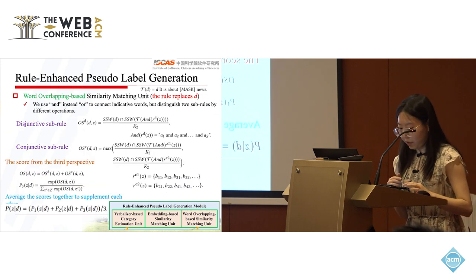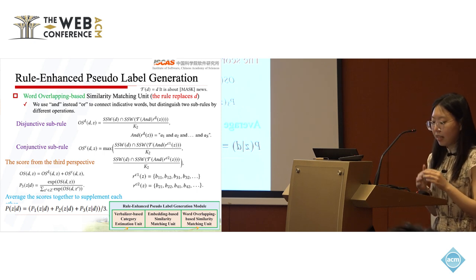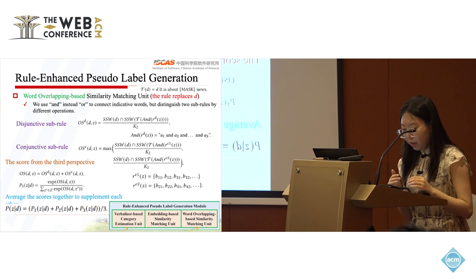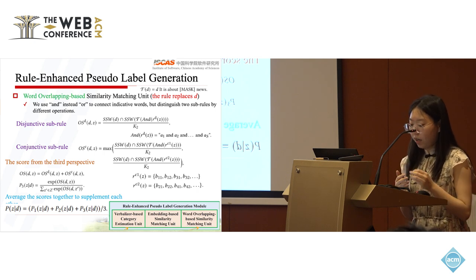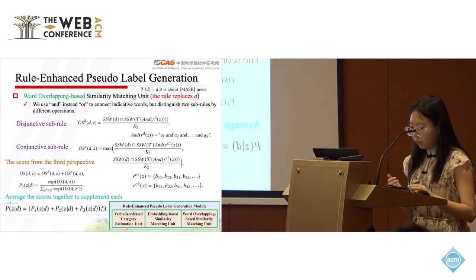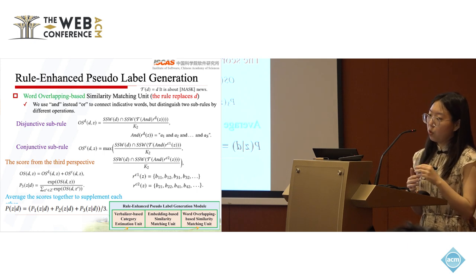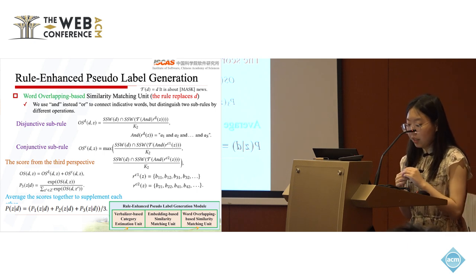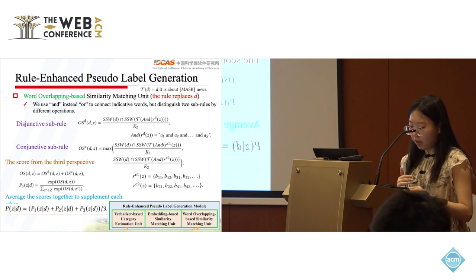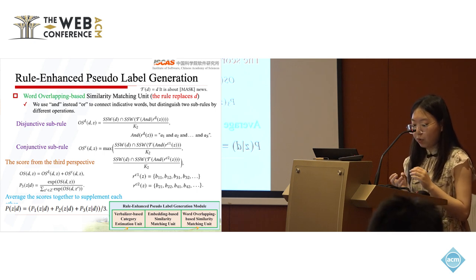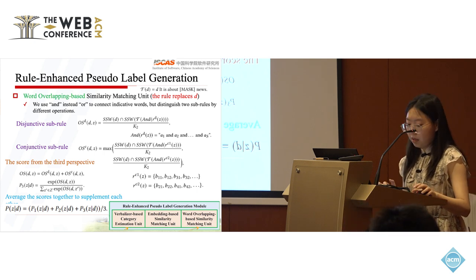In the word overlapping unit, we use the rule to replace the document position in template as an independent sentence. Here, considering the typical human speech pattern, we use AND instead of OR to connect indicated words within a rule. For the disjunctive sub-rule, we calculate the overlapping of the strong signal words. For the conjunctive sub-rule, as the involved indicative words are weaker, the match process should be more strict. Hence, we divide the sub-rule into two parts, construct the sentence separately, and take the maximum of the similarity score.